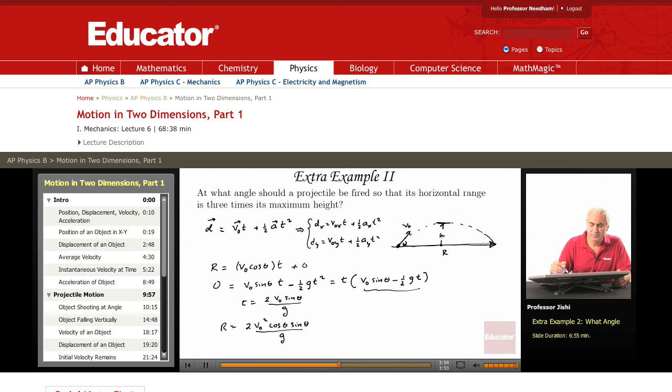Now, how about the maximum height? At maximum height, VY equals 0. So I can use the formula VY squared minus V0Y squared equals 2AYDY.